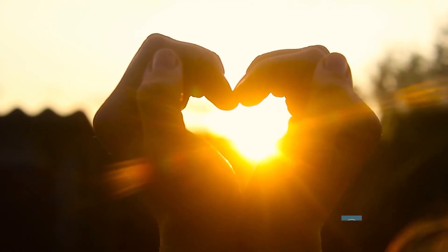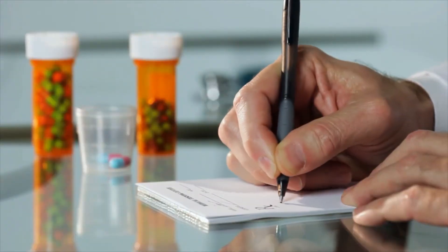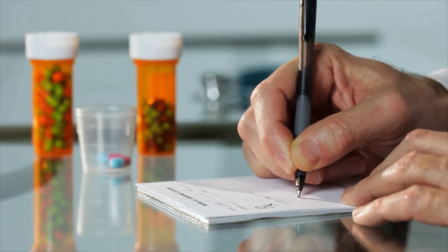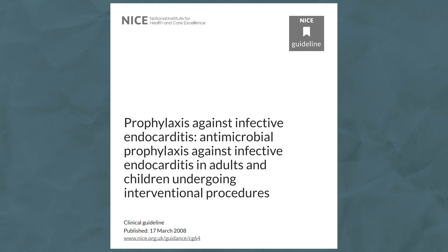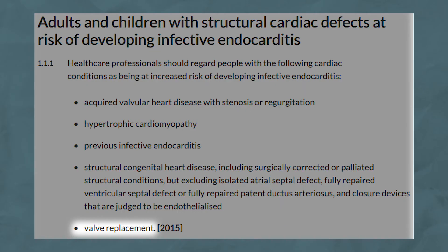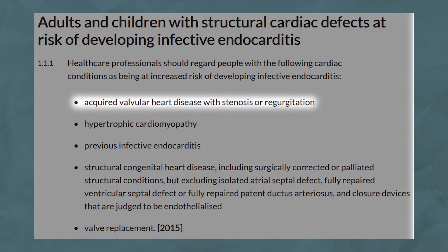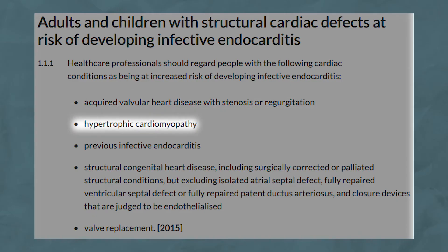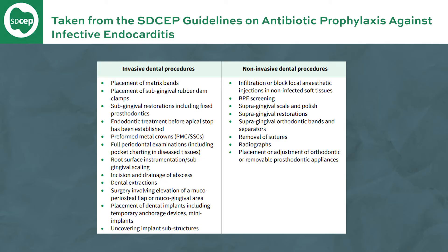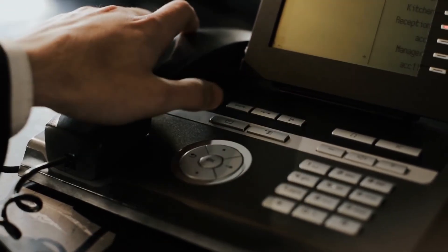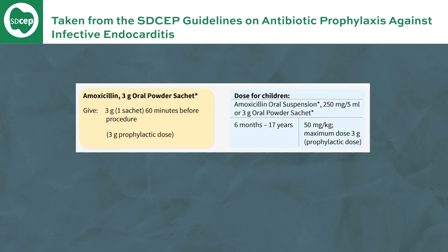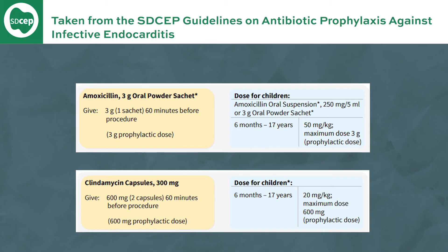Another scenario is antibiotic prophylaxis for patients at risk of infective endocarditis. Previously antibiotics were prescribed before dental treatment for a wide variety of heart conditions, but in 2008 NICE introduced new guidelines recommending it only for specific cases: patients with a prosthetic valve, a previous episode of infective endocarditis, congenital heart disease, acquired valvular heart disease with stenosis or regurgitation, or hypertrophic cardiomyopathy. Antibiotics are only required for invasive dental treatment. If you're about to perform invasive treatment on one of these high-risk patients, contact their cardiologist — if they recommend prophylaxis, prescribe 3g of amoxicillin one hour before treatment, or 600mg of clindamycin one hour before if the patient is allergic to penicillin.